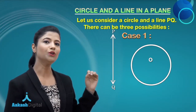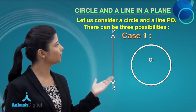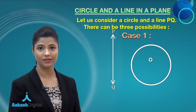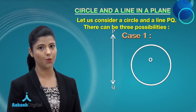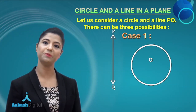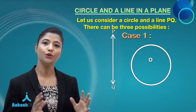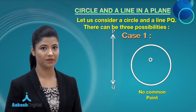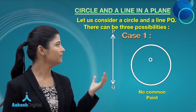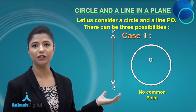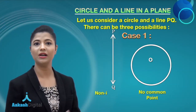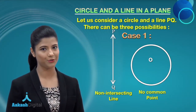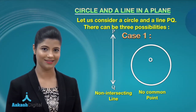Coming to the first case, you can observe in this figure a circle with center O and the straight line PQ. You can find that these two have no points in common, and this line PQ is said to be a non-intersecting line with respect to the circle.